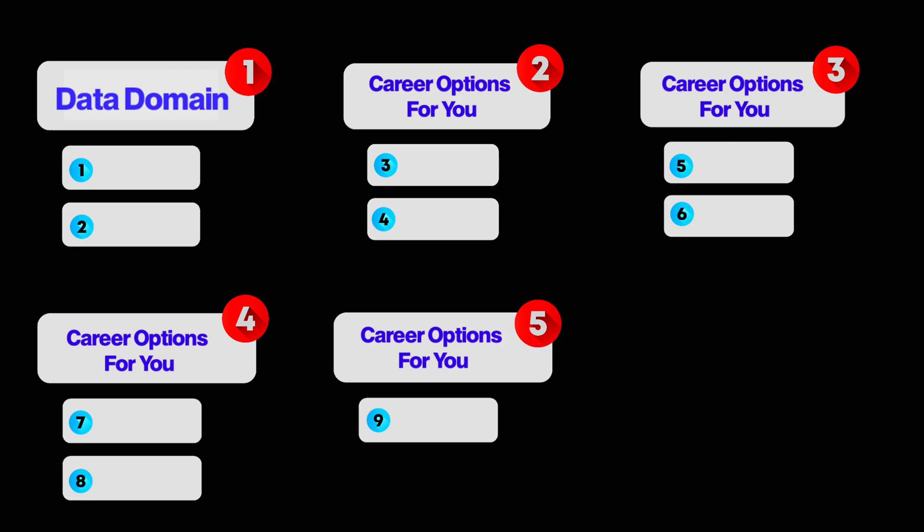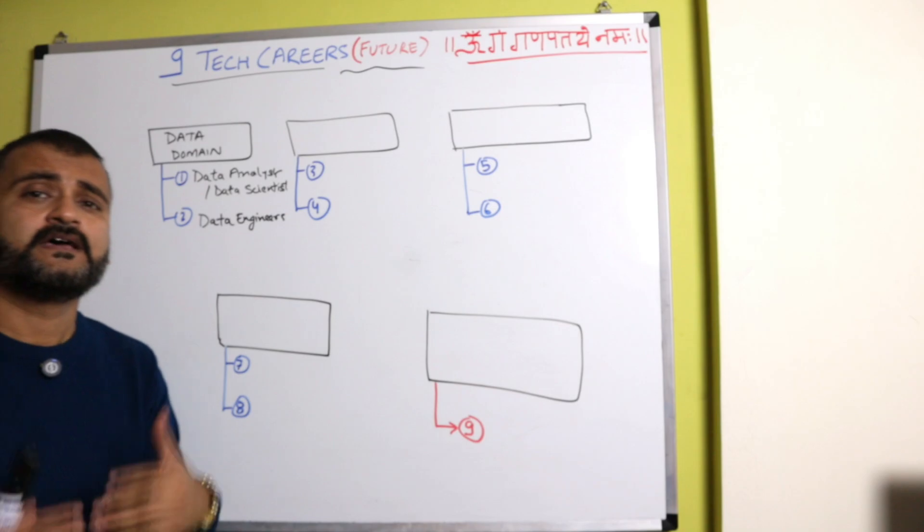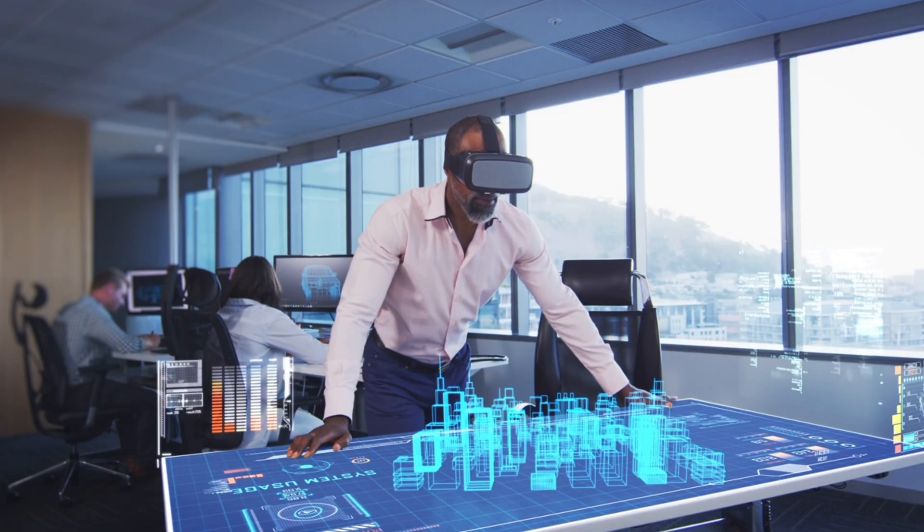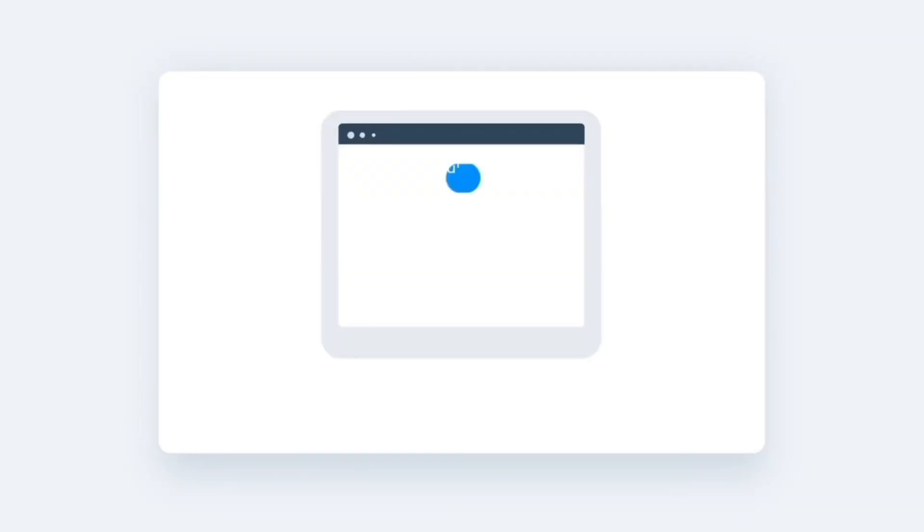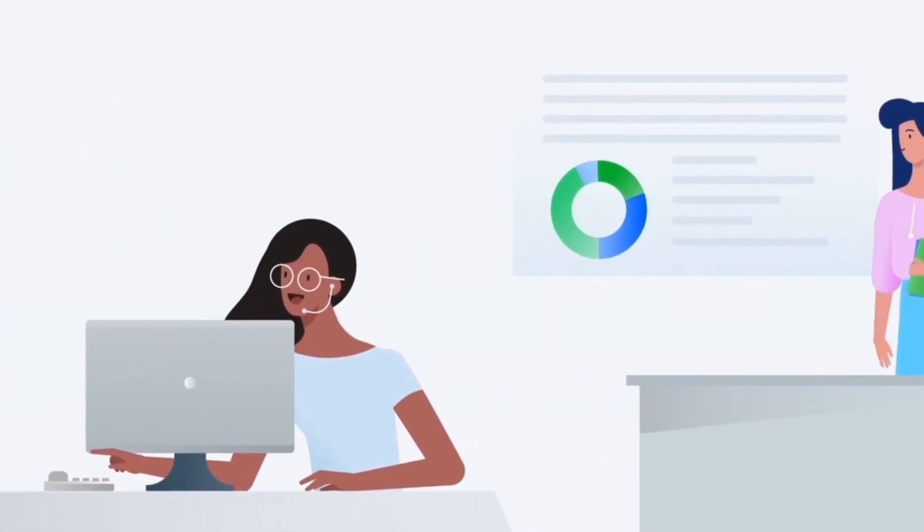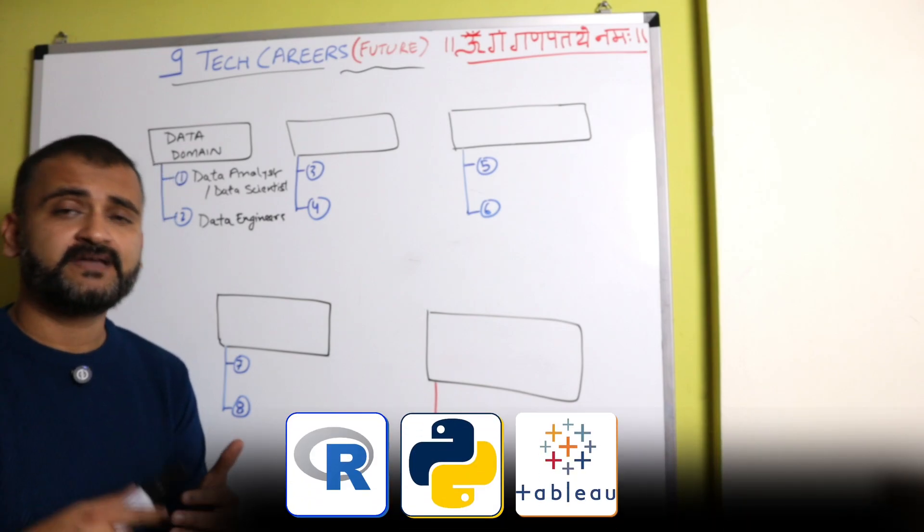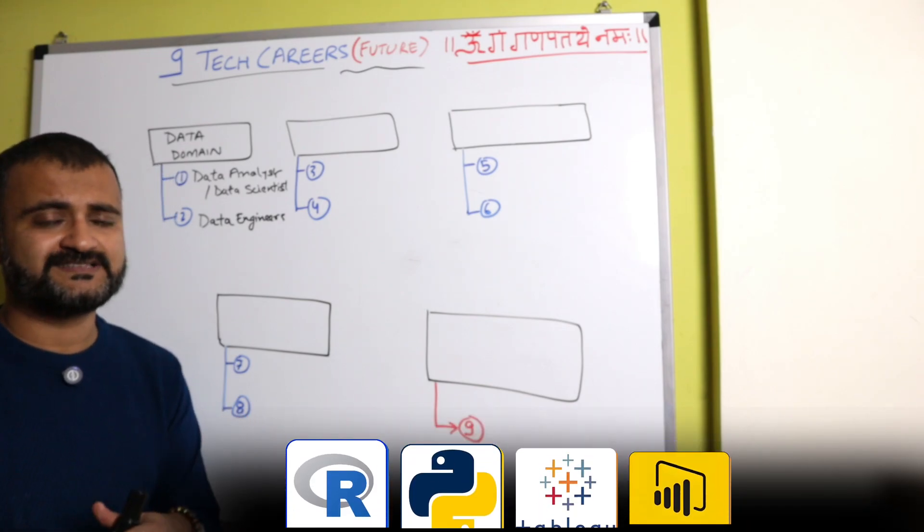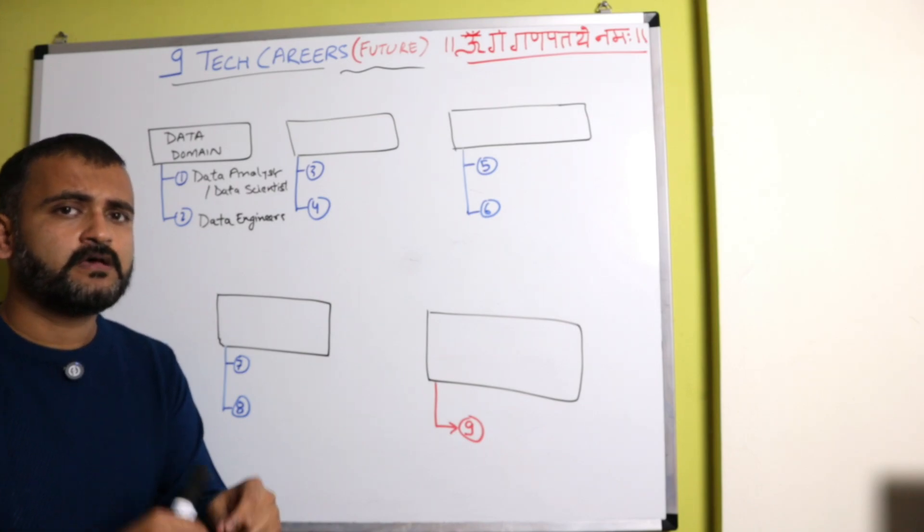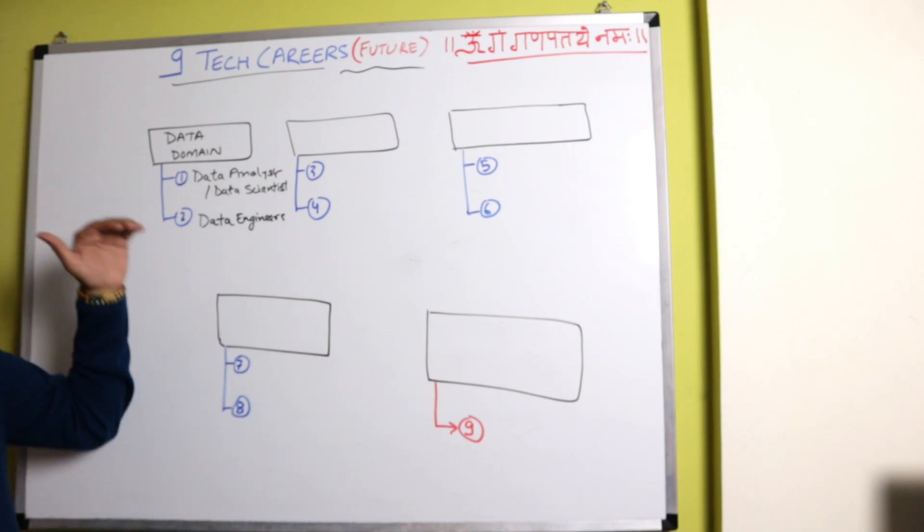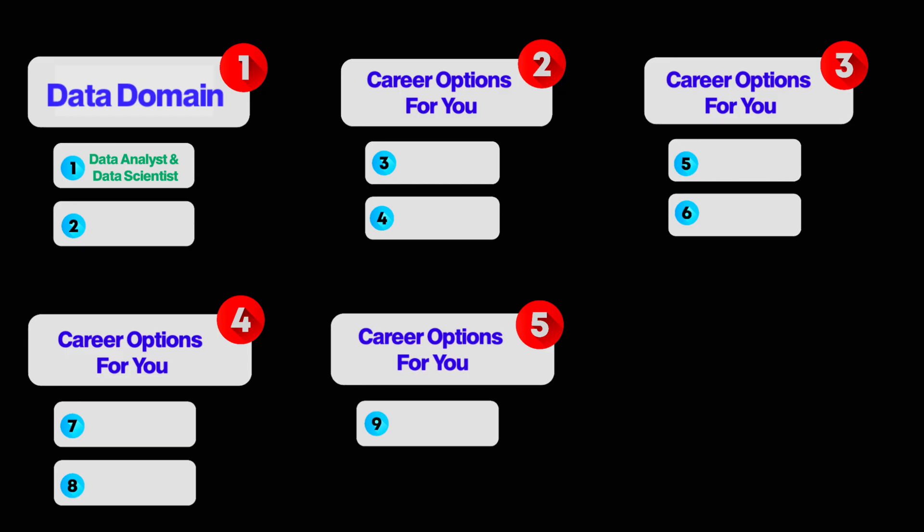The very first domain is data domain. And under data domain, the very first set of roles are of data analysts and data scientists. As data is becoming more and more vital in the age of AI, you will need data analysts, you will need data scientists which will help businesses draw useful insights from their data. And that's why people who are working in this domain need to learn skills like R, Python, Tableau, Power BI, all those kinds of skills.